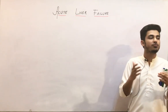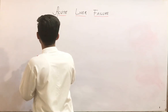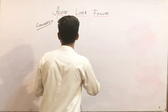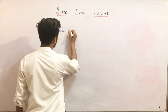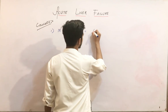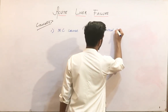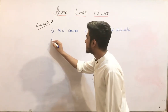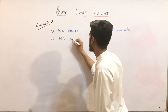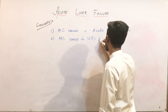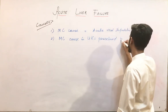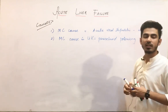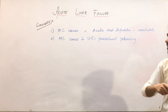Now, what are the causes of acute liver failure — why is acute liver failure occurring? One of the most common causes worldwide is acute viral hepatitis. The most common cause in the UK is paracetamol poisoning.